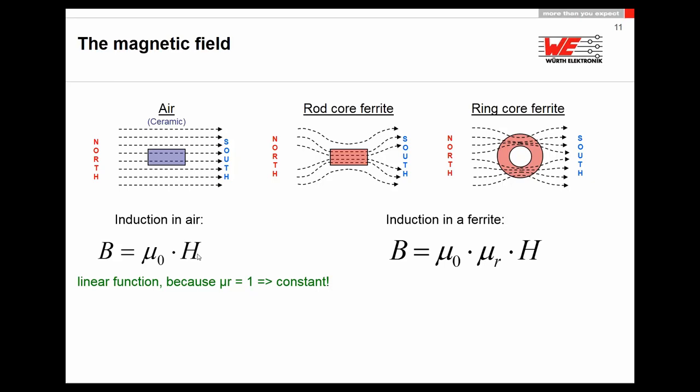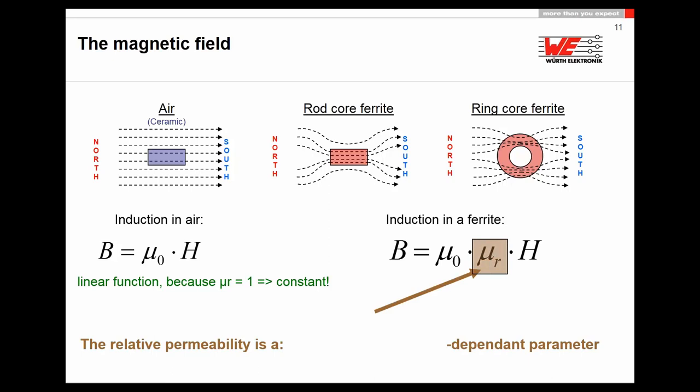With an air choke, more current means more H field and more B — the inductance is linear and nice. With a ferrite-core inductance, things become difficult because permeability is a dependent parameter. It depends on material, frequency, temperature, current, and pressure. Now you start to hate inductance. When I was a design engineer, every time I had to use an inductance I needed an aspirin, because this component always did something different from what I wanted.